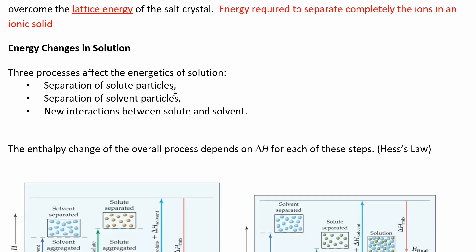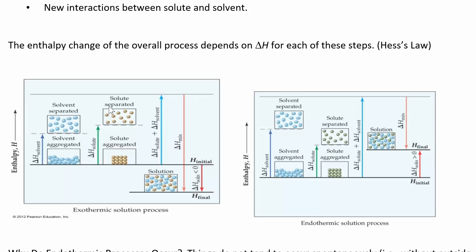The energy changes in solution involve three steps: separating the solute particles, separating the solvent particles, and forming new solute-solvent interactions. Looking at the energy diagram, it costs energy to rip the water molecules apart from each other, and more energy to separate the solute particles like sodium chloride ions. Then when everything comes back together to form the solution, energy is released. The first two processes are endothermic, and the last one is exothermic. Whether the overall solution process is exothermic or endothermic depends on the relative magnitudes of these steps, which you can add up using Hess's law.